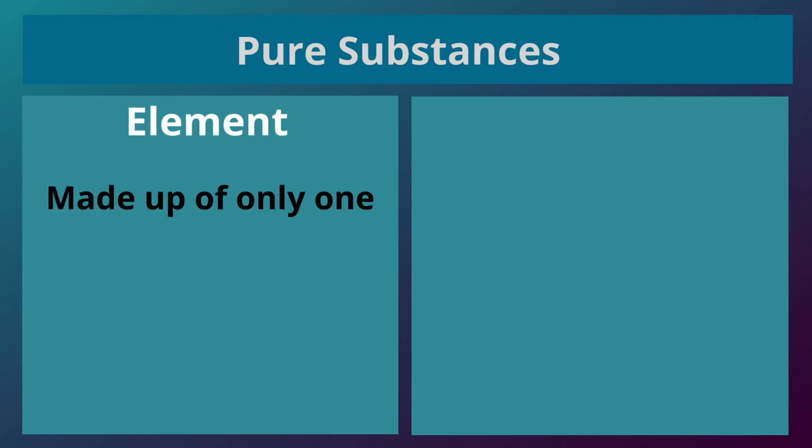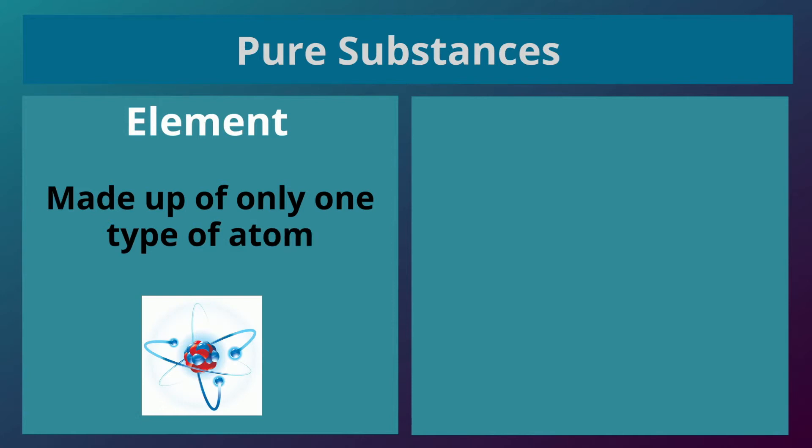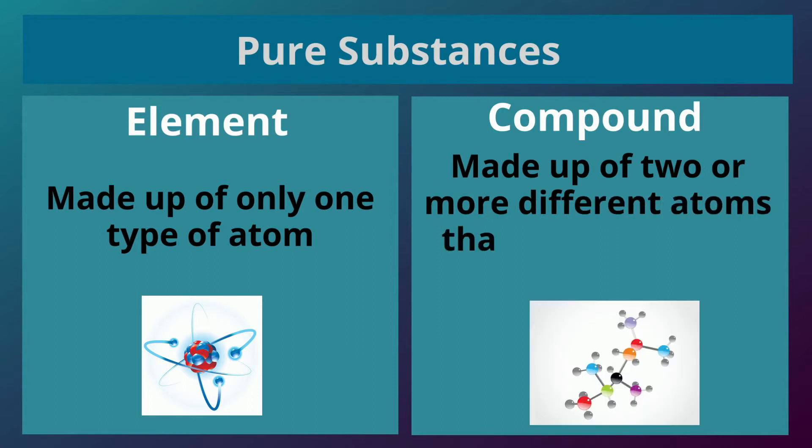An element is made up of only one type of atom. A compound is made up of two or more different atoms that are chemically bonded together.